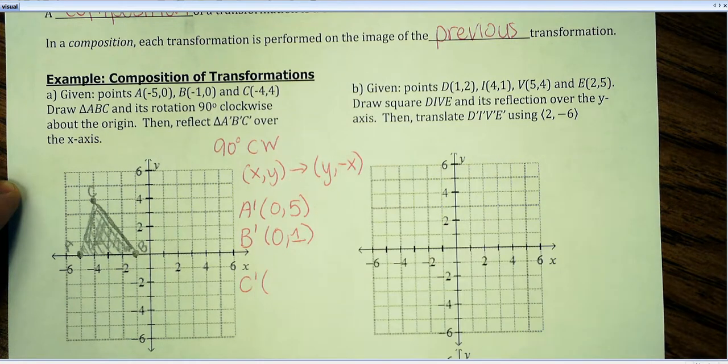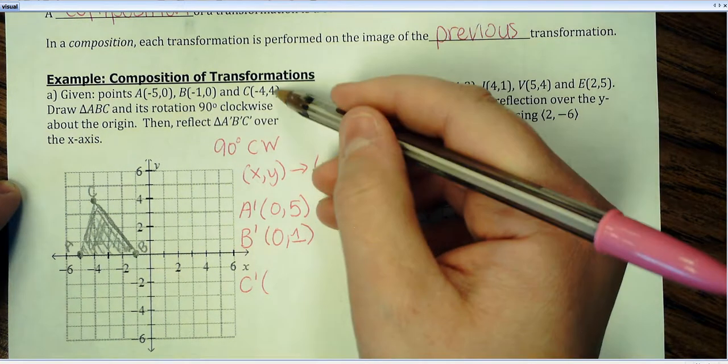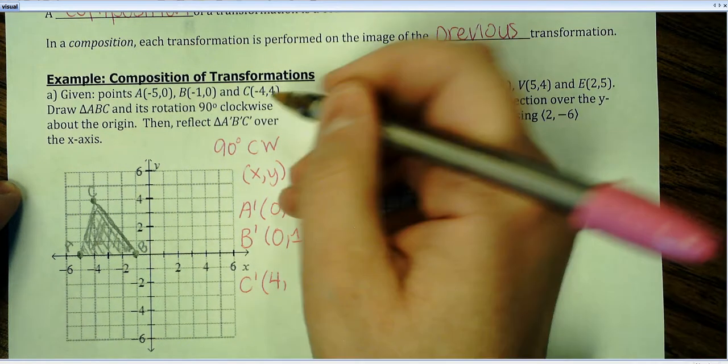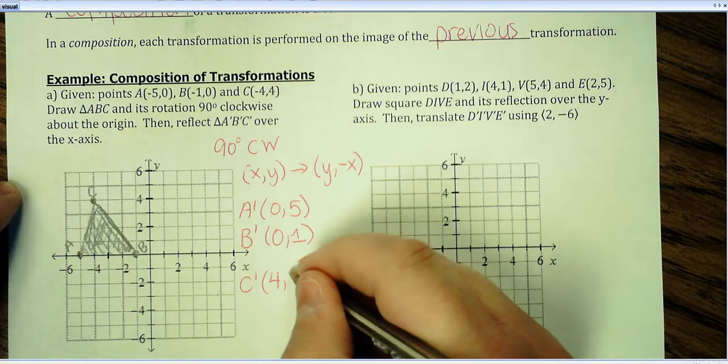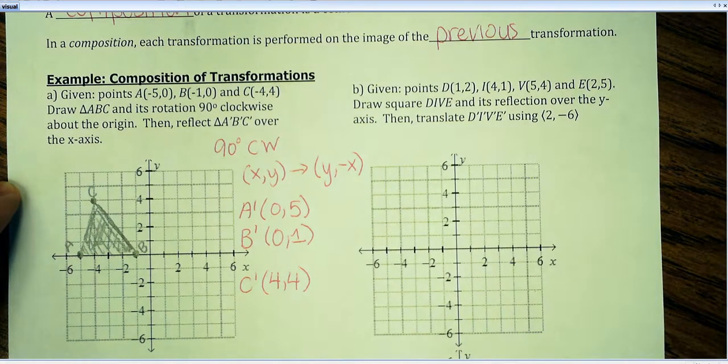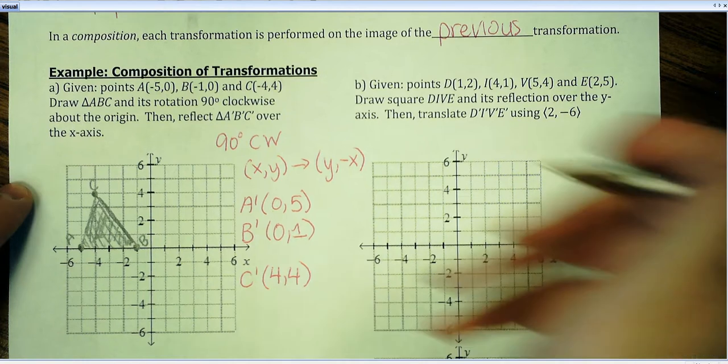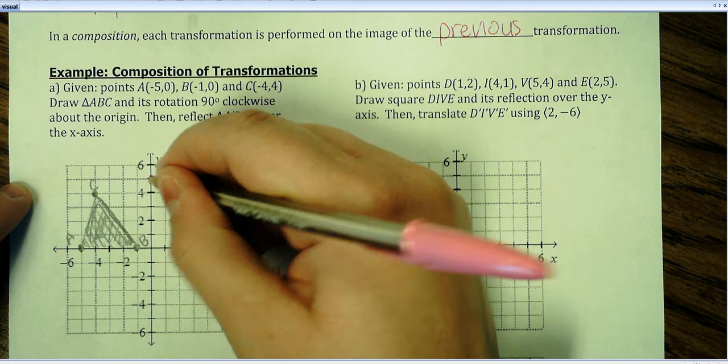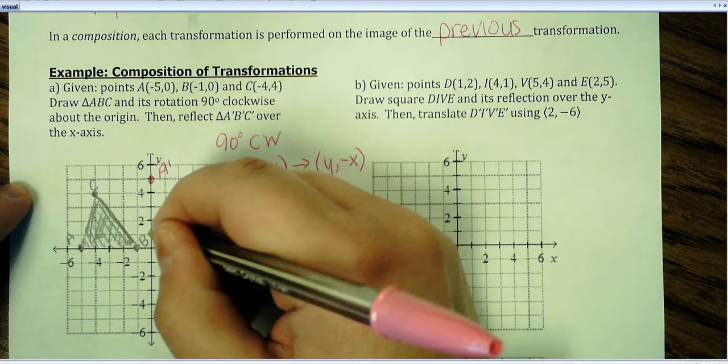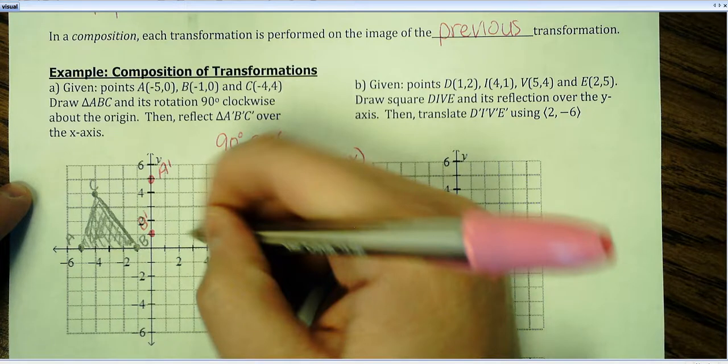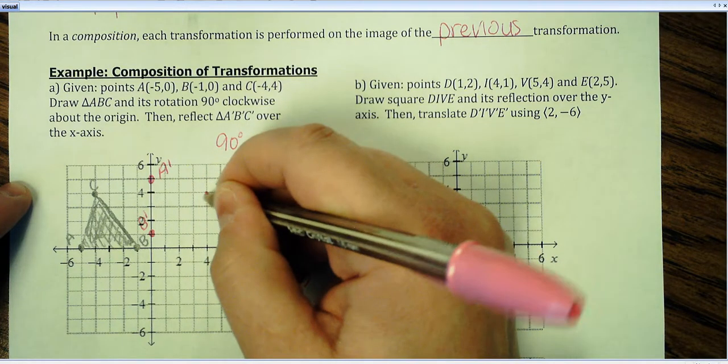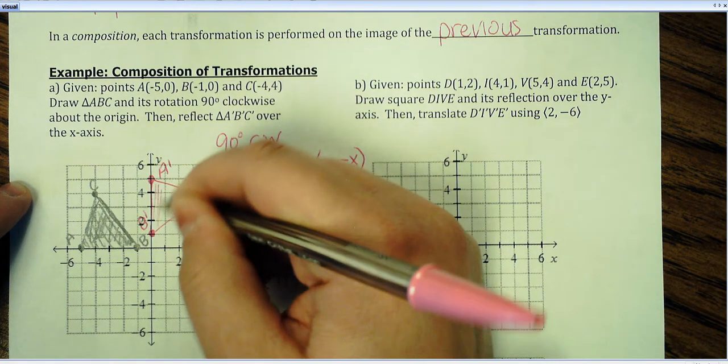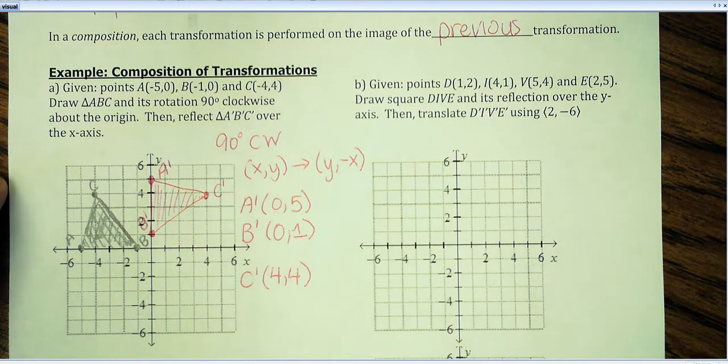And then C prime, our final point in the triangle here, the Y coordinate was 4, so that becomes the X coordinate in the rotated point. And the opposite of the X coordinate, which will become positive 4, will be the Y coordinate of the rotated point. And then just take a second and graph these points here. So A prime, here's B prime, and C prime. Just so we can see it a little better, I'll color it in.